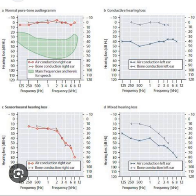Vestibular schwannoma, also known as acoustic neuroma, is a benign tumor of the internal auditory canal or cerebellopontine angle arising from the Schwann cells of the vestibular nerve. As the tumor grows, it compromises cochlear and/or vestibular nerve function, affecting hearing and/or balance. The associated hearing loss is a unilateral or asymmetric high-frequency sensorineural hearing loss on the affected side. These tumors are typically unilateral, except in neurofibromatosis type 2, in which bilateral tumors are diagnostic.